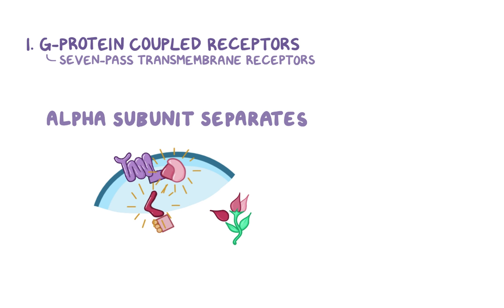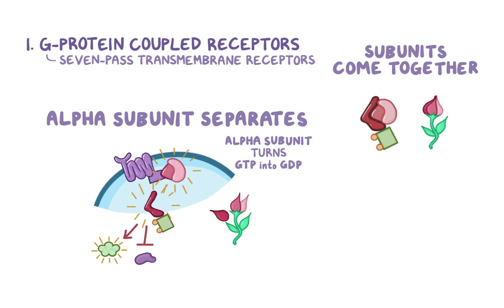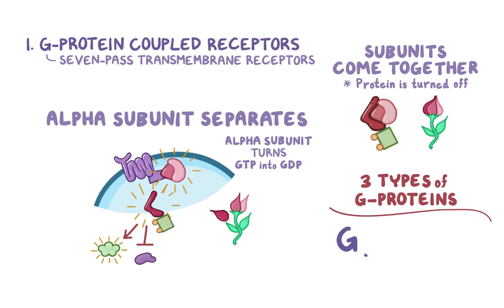When that happens, the alpha subunit is free to interact with other proteins — stimulating some while inhibiting others. To act on other proteins, the alpha subunit converts GTP into GDP, and when that happens the three subunits come together again, the flower closes, and the G-protein is turned off. Overall, there are three types of G-proteins: GQ, GI, and GS, and each one stimulates and inhibits a different set of enzymes and molecular pathways.